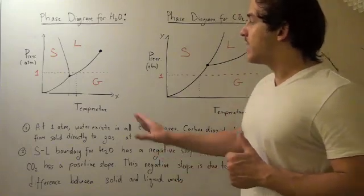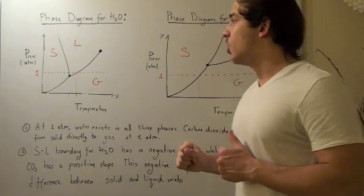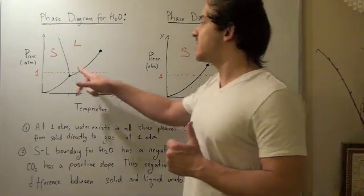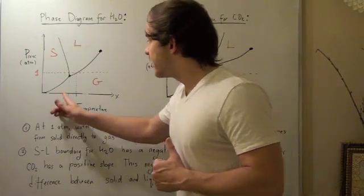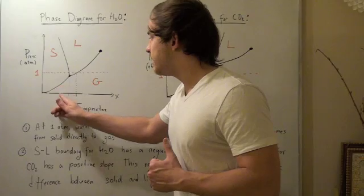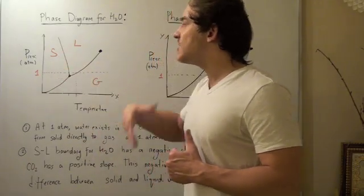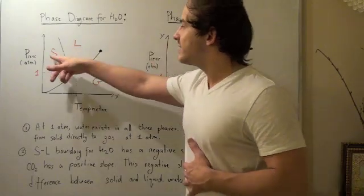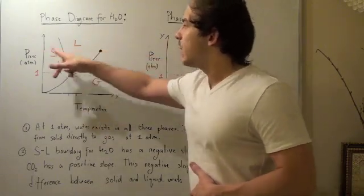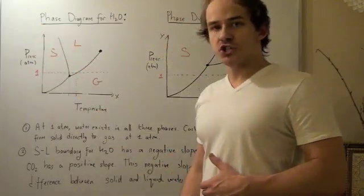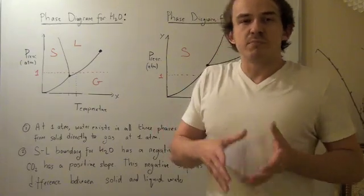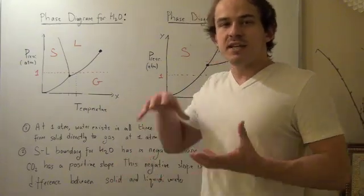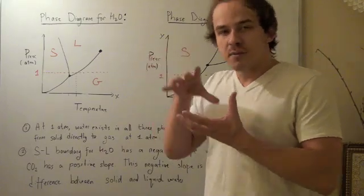Now, one more effect because of this negative slope is the following. Because the slope is negative, if we keep our temperature constant, say somewhere right here, we see that we can actually make the solid become a liquid by simply increasing our pressure. So at constant temperature, we can make a solid become a liquid by simply compressing it, increasing the pressure.